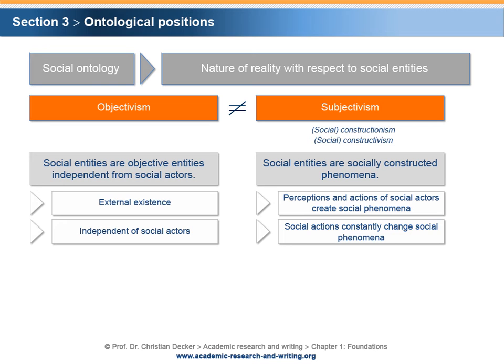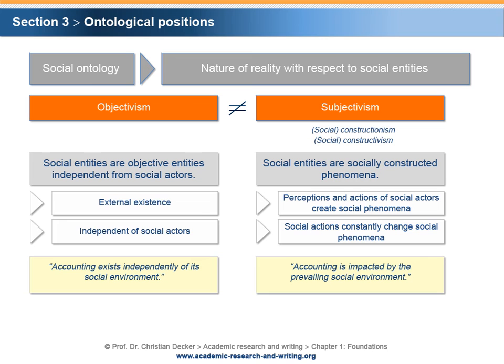The relevance of ontological positions for research can be exemplified by accounting research. A researcher who favors objectivism could assert that accounting exists independently of its social environment. As a result, the researcher would ignore social aspects while merely focusing on technocratic aspects of accounting. An objectivist position might be helpful if a researcher wants to analyze different techniques of double-entry bookkeeping on an abstract basis. A researcher who favors subjectivism could assert that accounting is impacted by the prevailing social environment, and would address social aspects in addition to technocratic aspects. A subjectivist position might be helpful if a researcher wants to analyze accidental bookkeeping errors or deliberate accounting fraud.